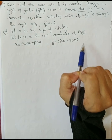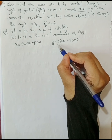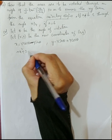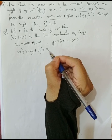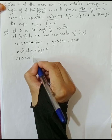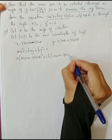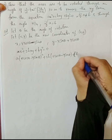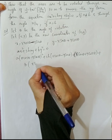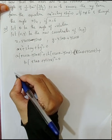The given equation is ax squared plus 2hxy plus by squared equals 0. The rotation substitutions are: small x equals X cos theta minus Y sin theta, and small y equals X sin theta plus Y cos theta. Substituting into the equation: a into (X cos theta minus Y sin theta) whole square, plus 2h into (X cos theta plus Y sin theta), plus b into (X sin theta plus Y cos theta) whole square, equals 0.